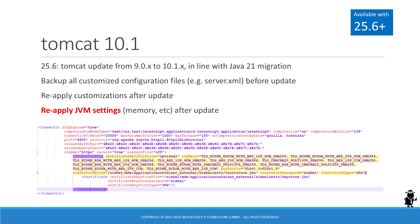Tomcat 10.1 supersedes Tomcat 9.0 with Siebel CRM 25.6 and higher. Administrators are advised to take a full backup of any customized configuration file, such as server.xml, before attempting the update, and to reapply customizations once the update is complete.